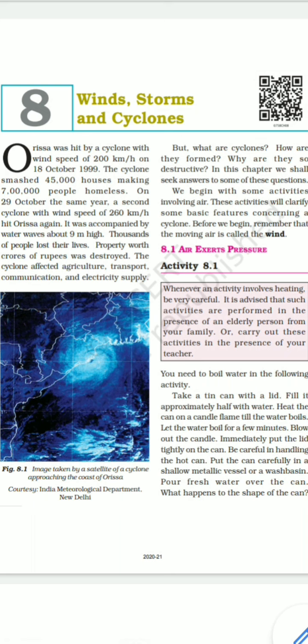The cyclone smashed 45,000 houses and left 7 lakh people homeless. On 29th October the same year, a second cyclone with a wind speed of 260 kilometers per hour hit Orissa again.